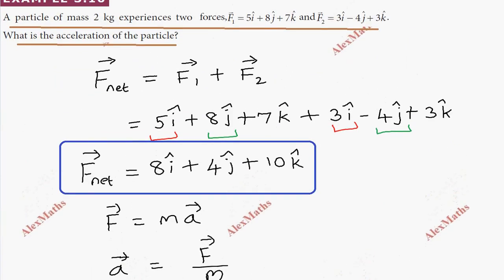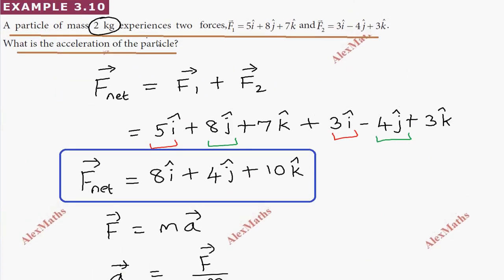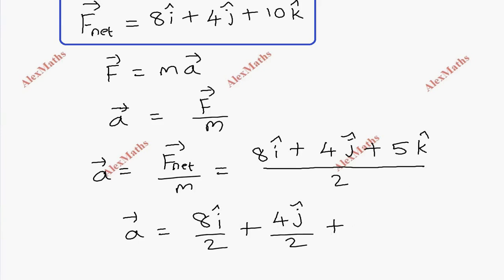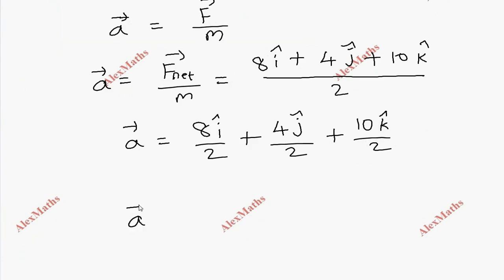The mass is 2 kg. We divide by mass: 8i divided by 2, plus 4j divided by 2, plus 10k divided by 2. After division, the acceleration vector is 4i plus 2j plus 5k.